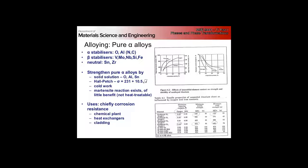The beta stabilizers are vanadium, molybdenum, niobium, silicon, and iron. The neutral elements are tin and zirconium, both of which are HCP. Zirconium is also a group four element like titanium, so chemically very much the same. Hafnium is also a neutral element, but not used very much because it's so expensive.